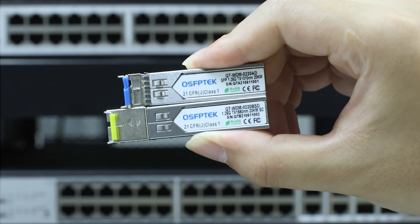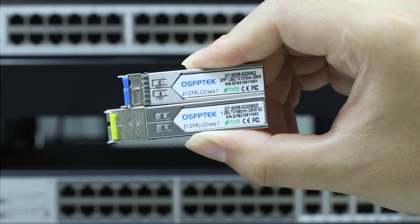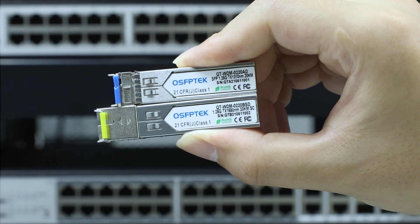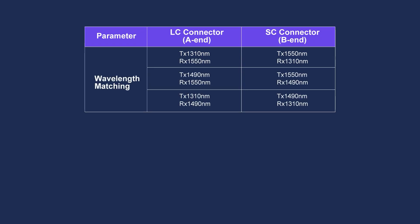However, it is crucial to note that the wavelengths of single fiber modules must be paired correctly, meaning the transmit wavelength of one end must match the receive wavelength of the other end. For example, if the A end has TX1310nm RX1550nm, then the B end must be configured as TX1550nm RX1310nm.